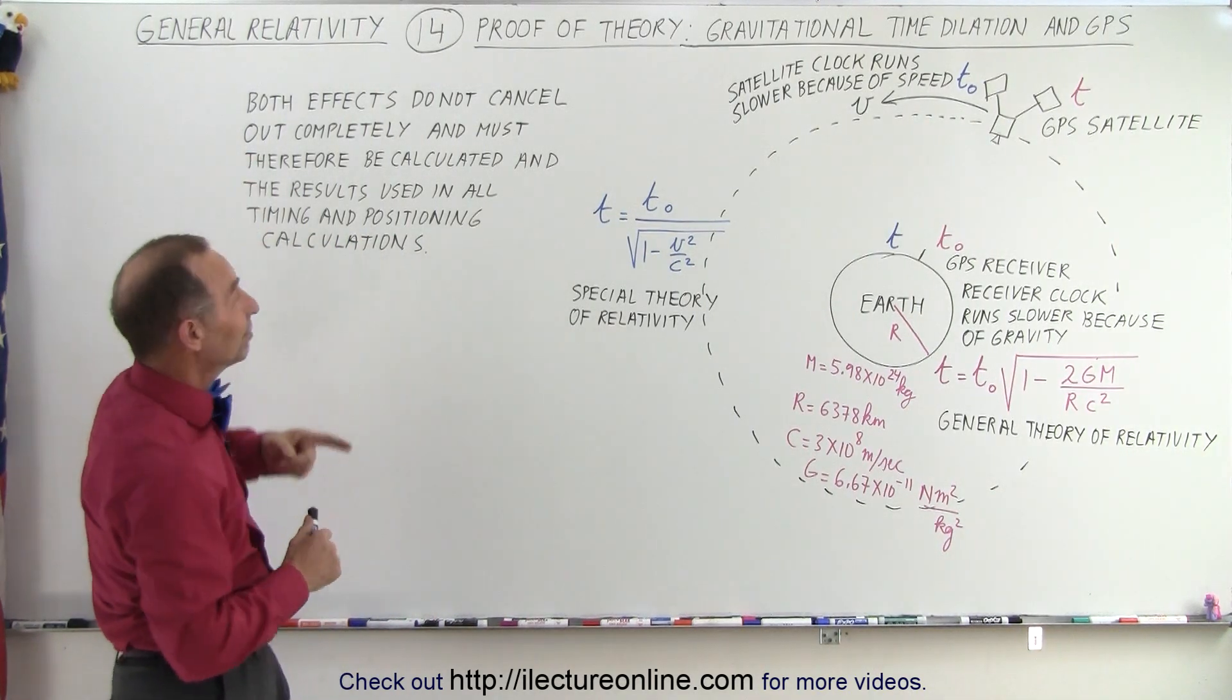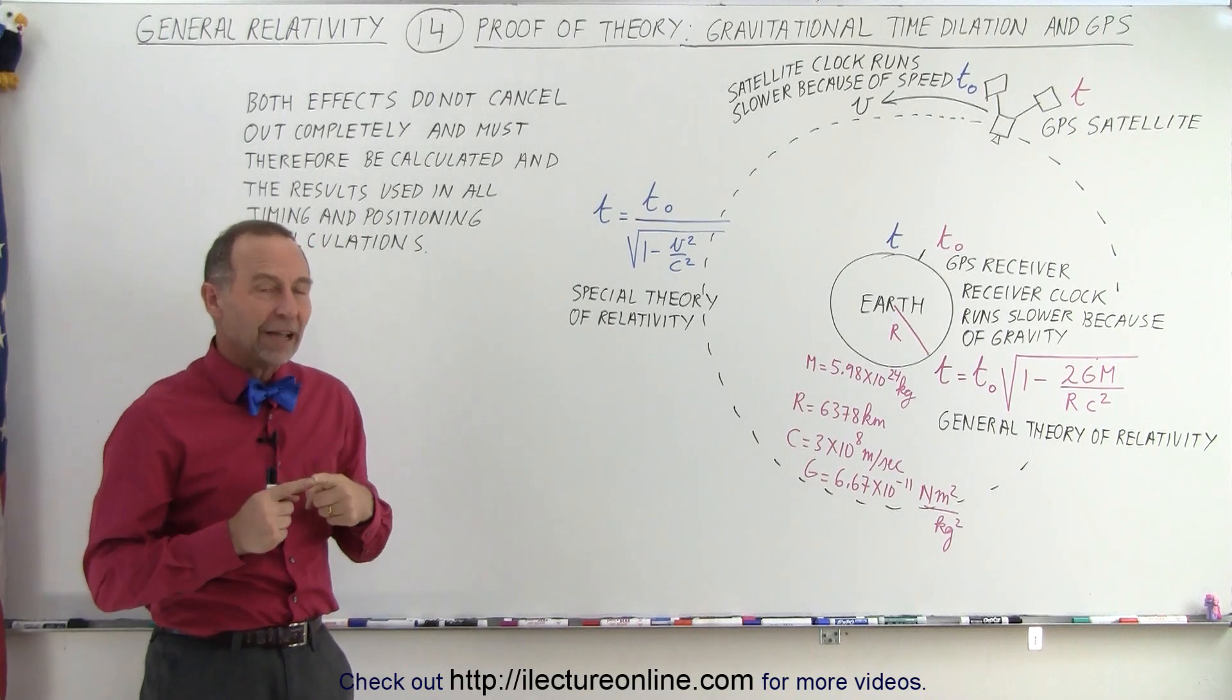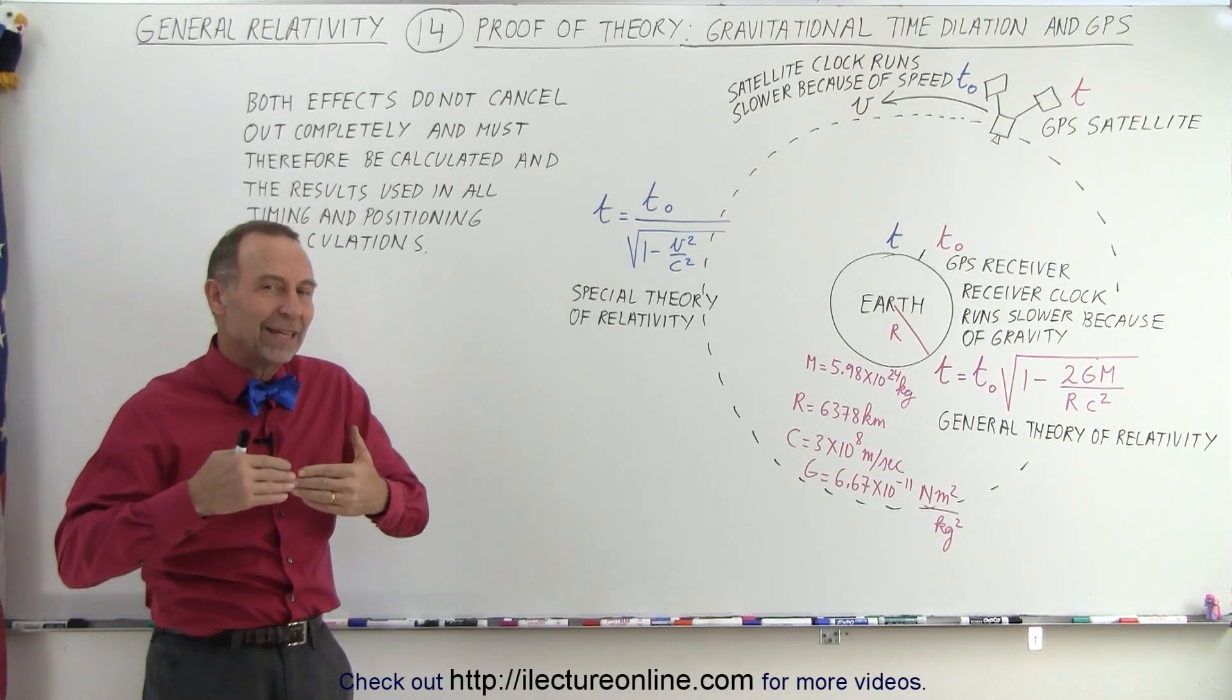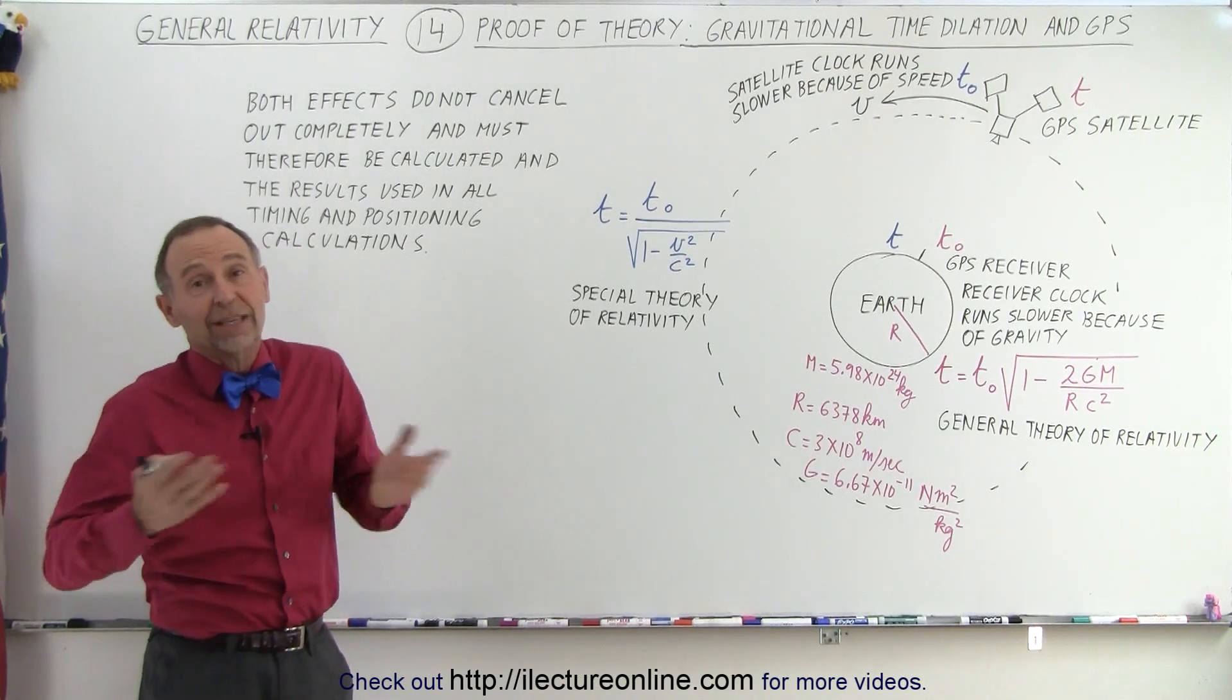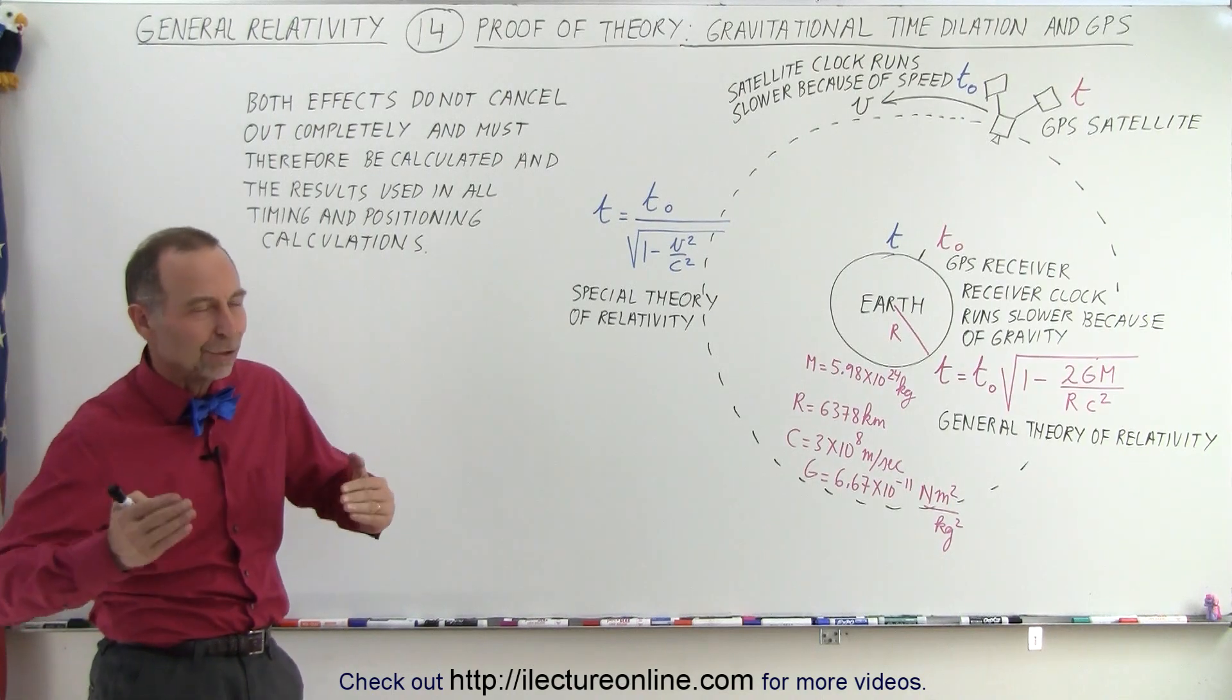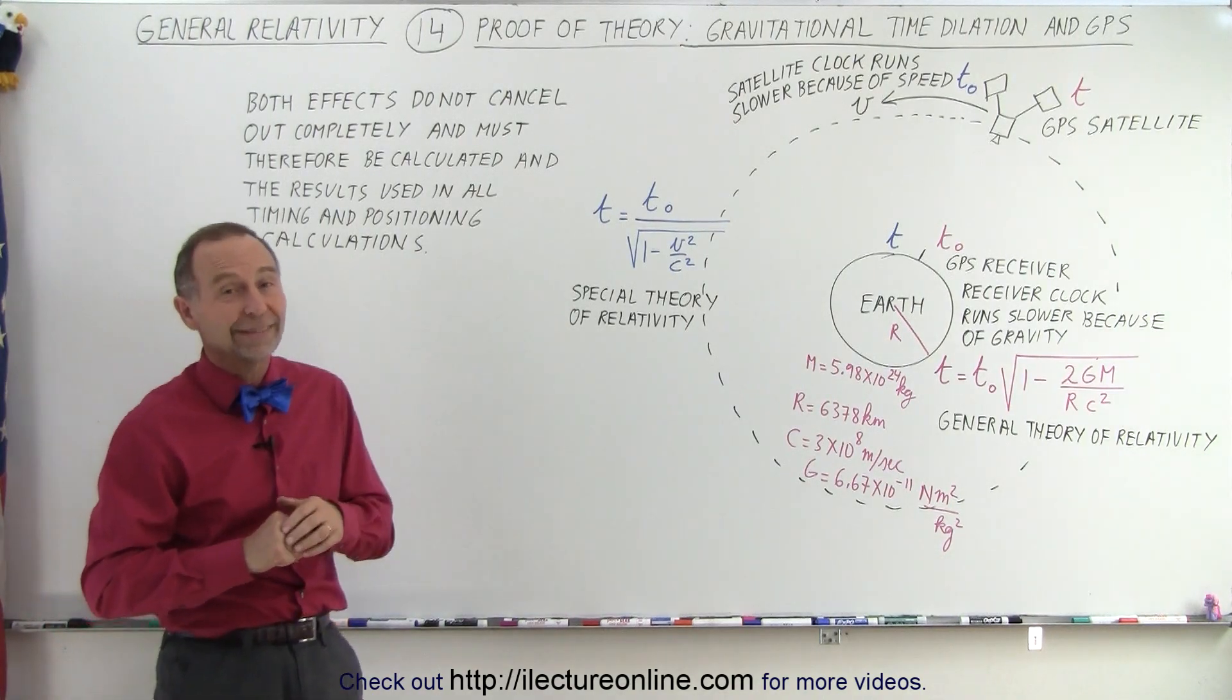And let's see. Oh, here, I have a note. They are opposite in effect, but they don't cancel out. So they need to be calculated separately and added together. Now, if they were to cancel out, we could ignore it, but they don't cancel out. They are of different magnitudes, and so therefore we do have to take them into account.